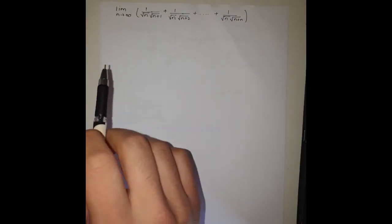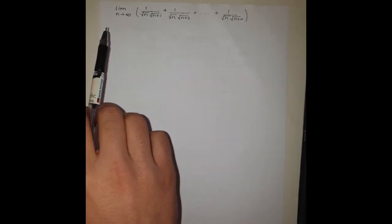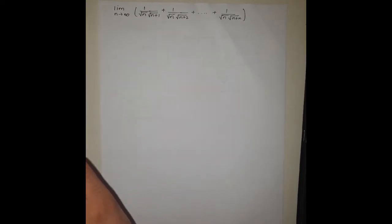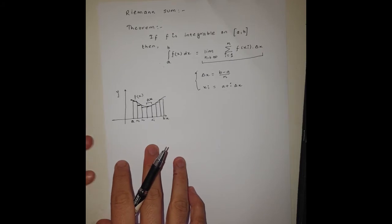Today we have a problem about limits where it says limit n tending towards infinity. Before starting this problem, I would like to say something about Riemann sum as we will need it later on while solving the problem. So let's start with the definition of Riemann sum.